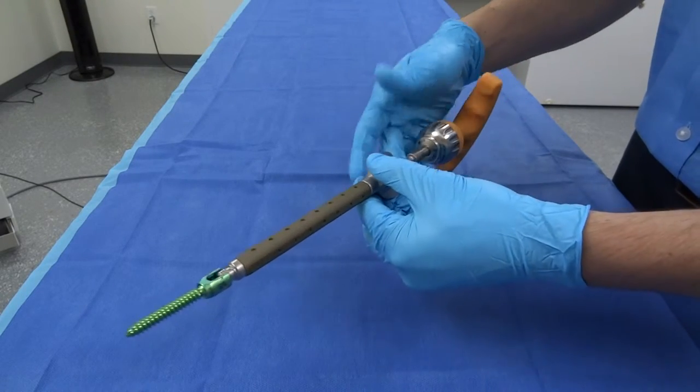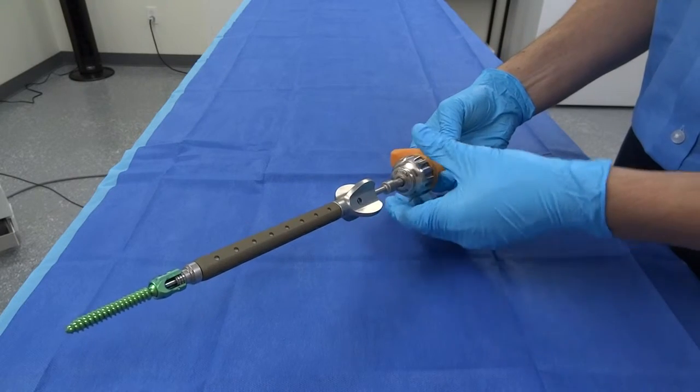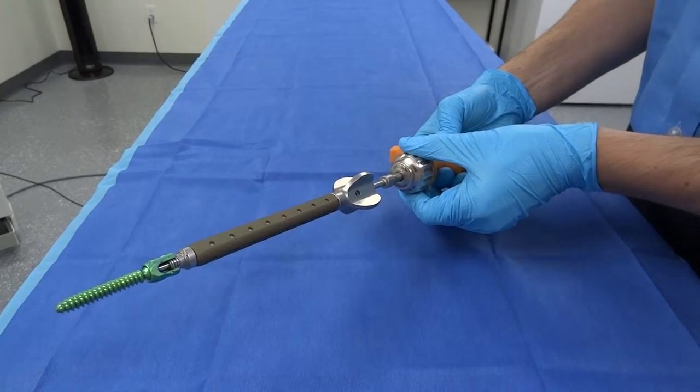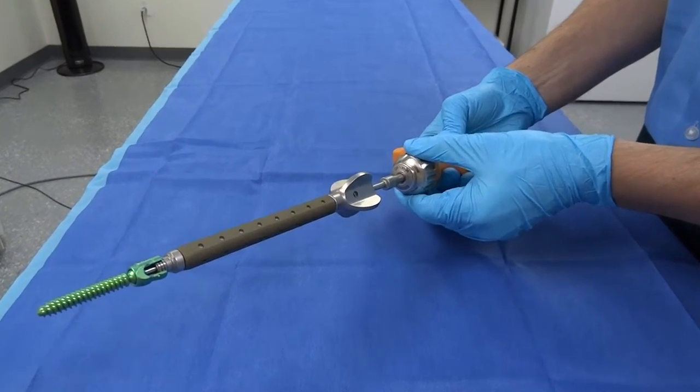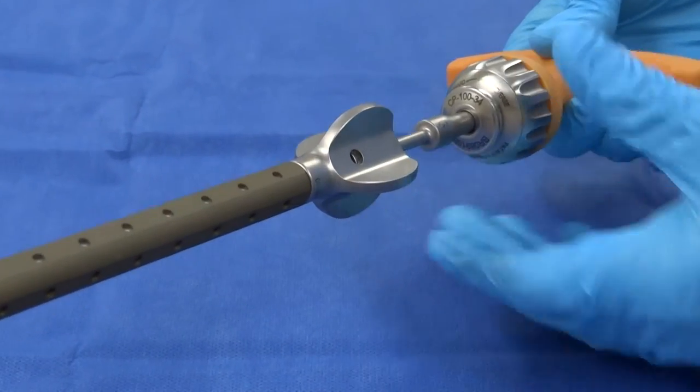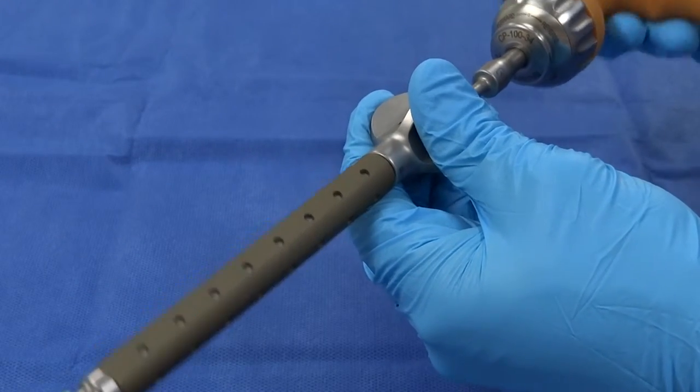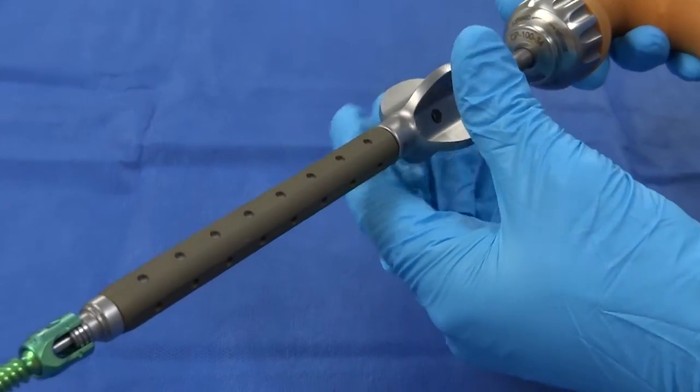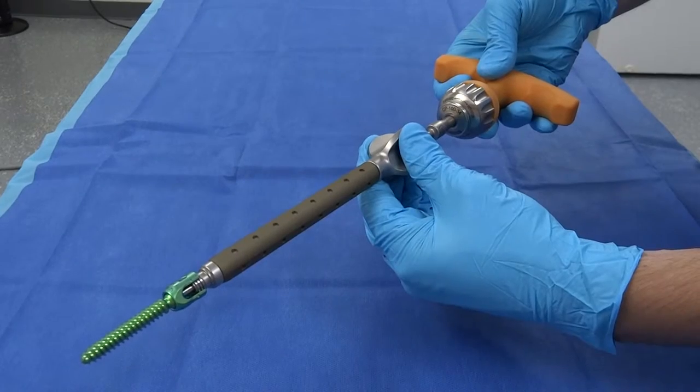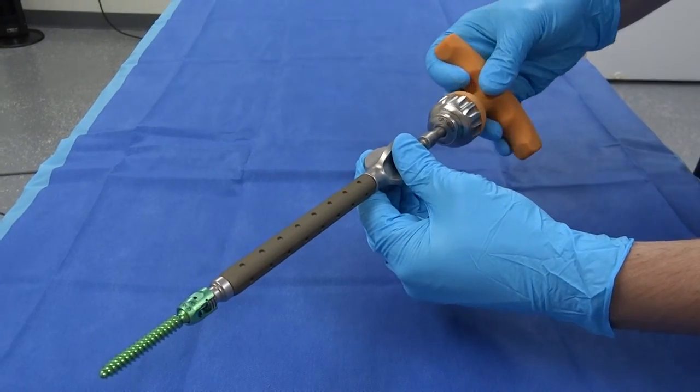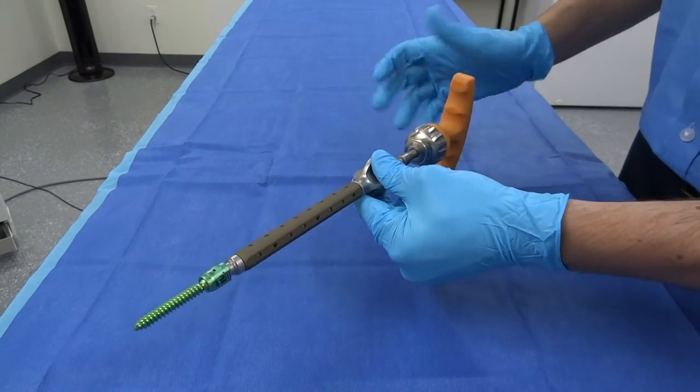Once fully threaded, put the ratcheting quick connect handle in reverse, and with one hand on the ratcheting handle and the other on the ball handle of the screwdriver, torque the driver to secure the screw rigidly.